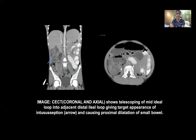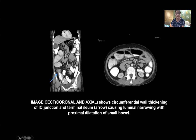Here are some imaging findings from the cases. The coronal and axial CT shows telescoping of the mid-ileal loops into the adjacent distal ileal loops, giving a target appearance of intussusception and causing proximal dilatation of small bowel loops. Another interesting case shows circumferential wall thickening of the ileocecal junction and terminal ileum, causing luminal narrowing with proximal dilatation of the small bowels.